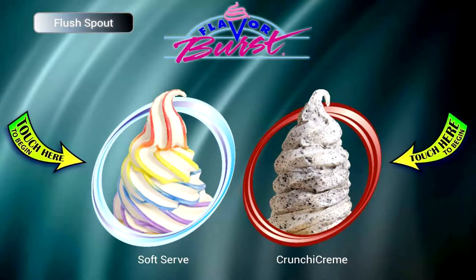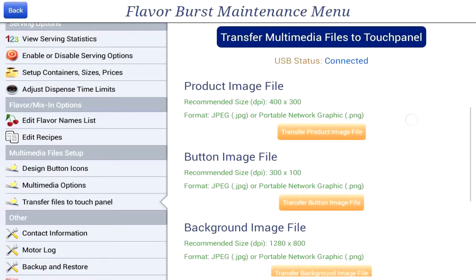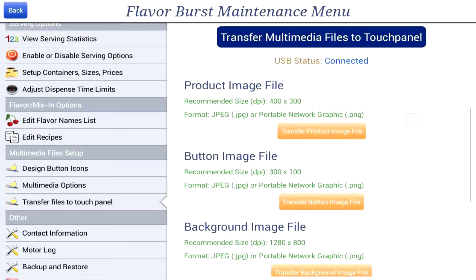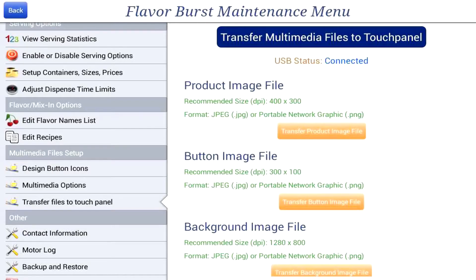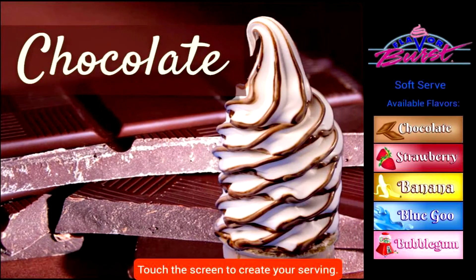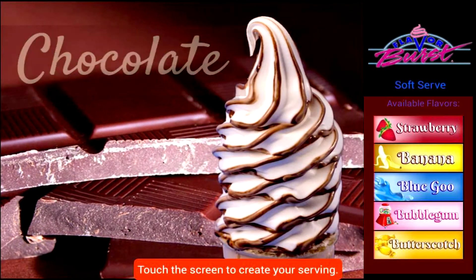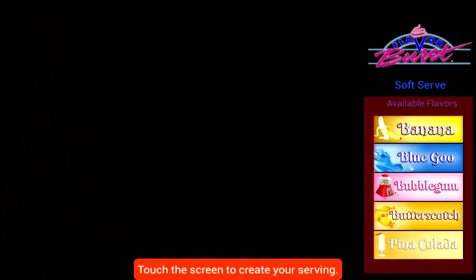The next file type is the button image file. These images are for the flavor selection buttons. These buttons will also scroll to the right while the promotional video is playing in between servings, as you can see here.